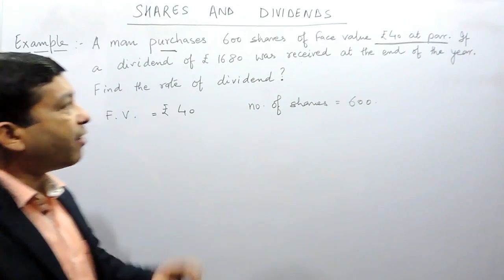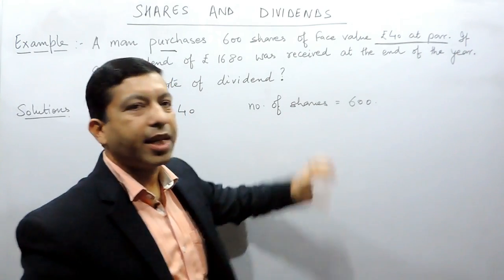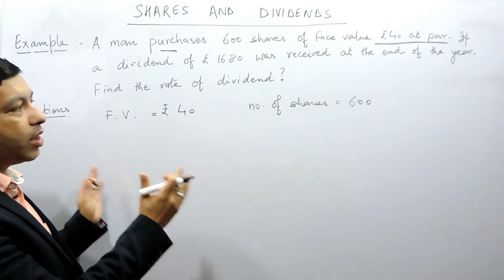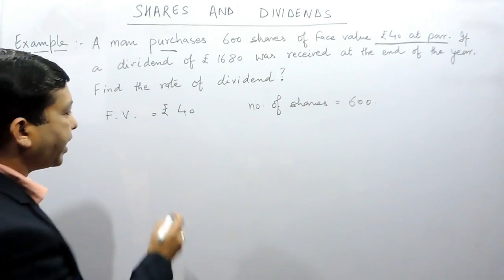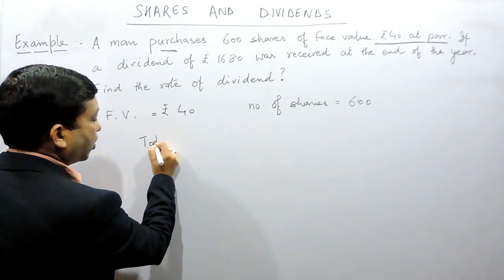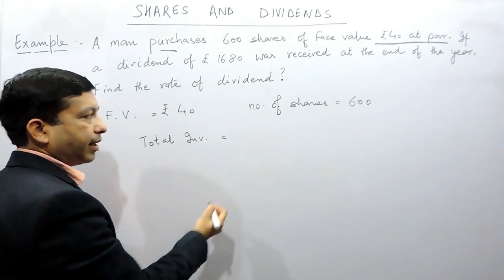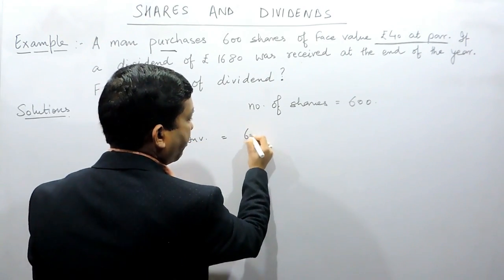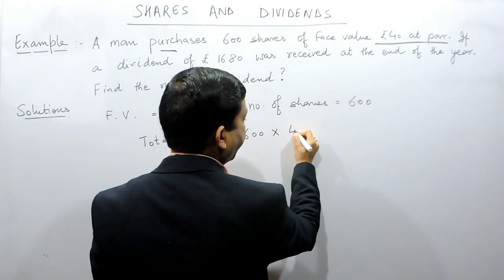Definitely, if one share is costing rupees 40 and there are 600 shares he has to purchase, then he has to invest 600 multiply by rupees 40 as the total investment. So the total investment to be done by the shareholder is number of shares, that is 600, multiply by the face value or the market value. So the total investment of the person is 24,000 rupees.